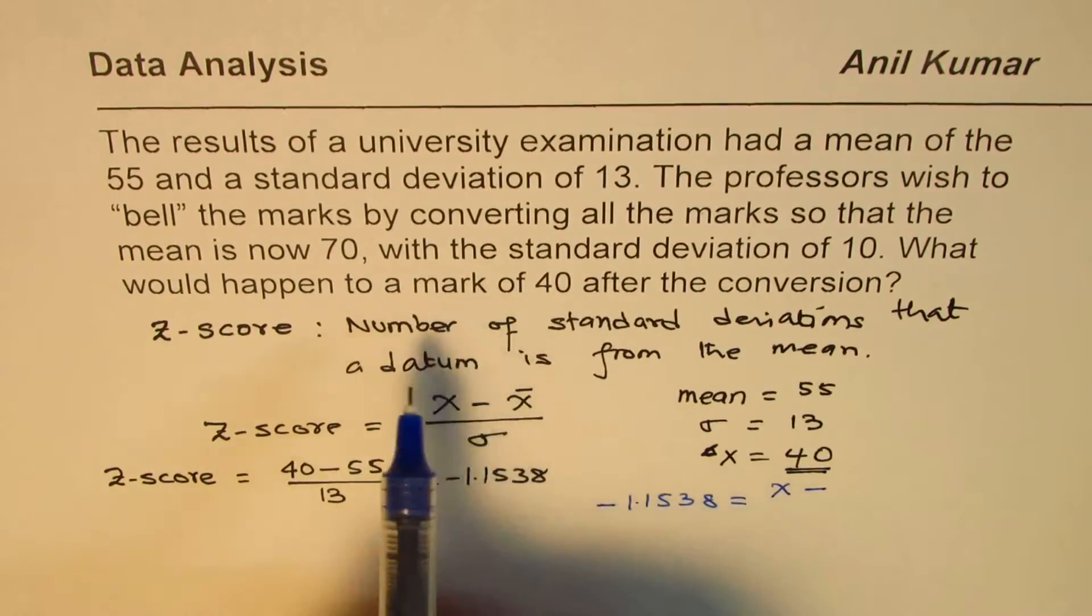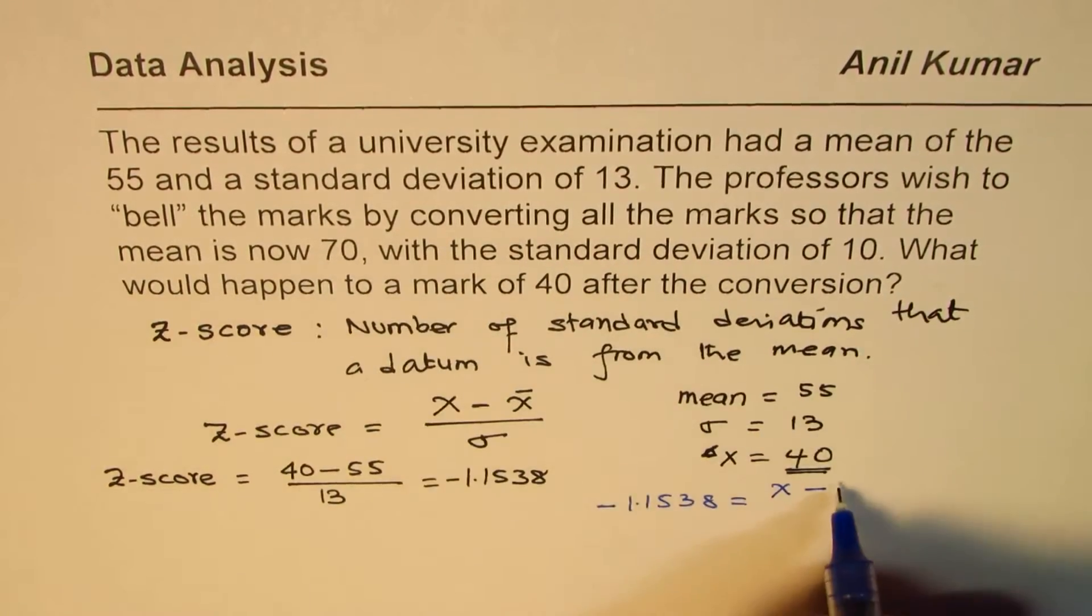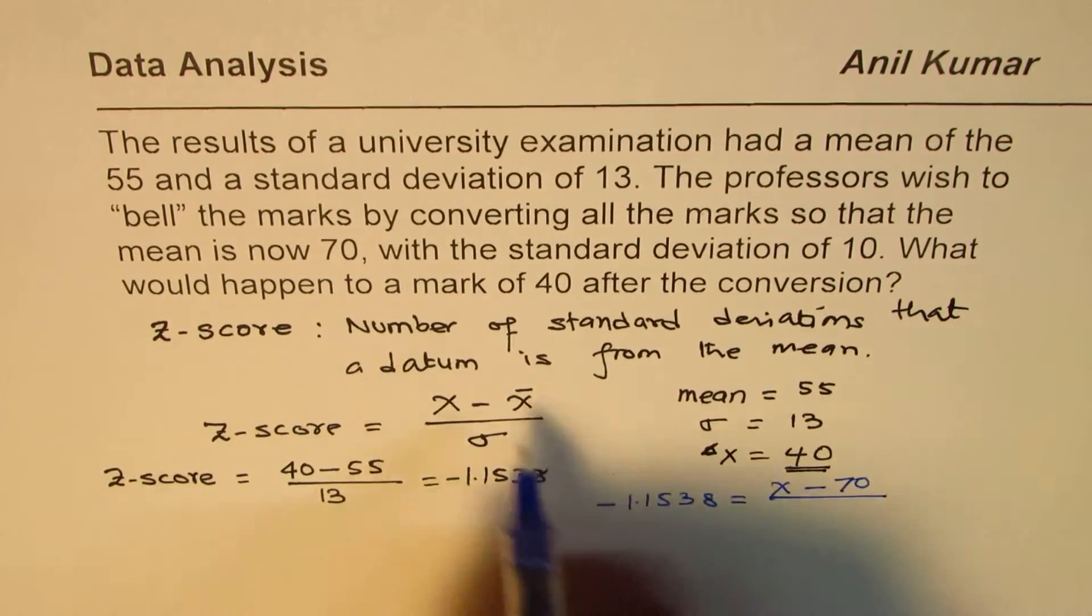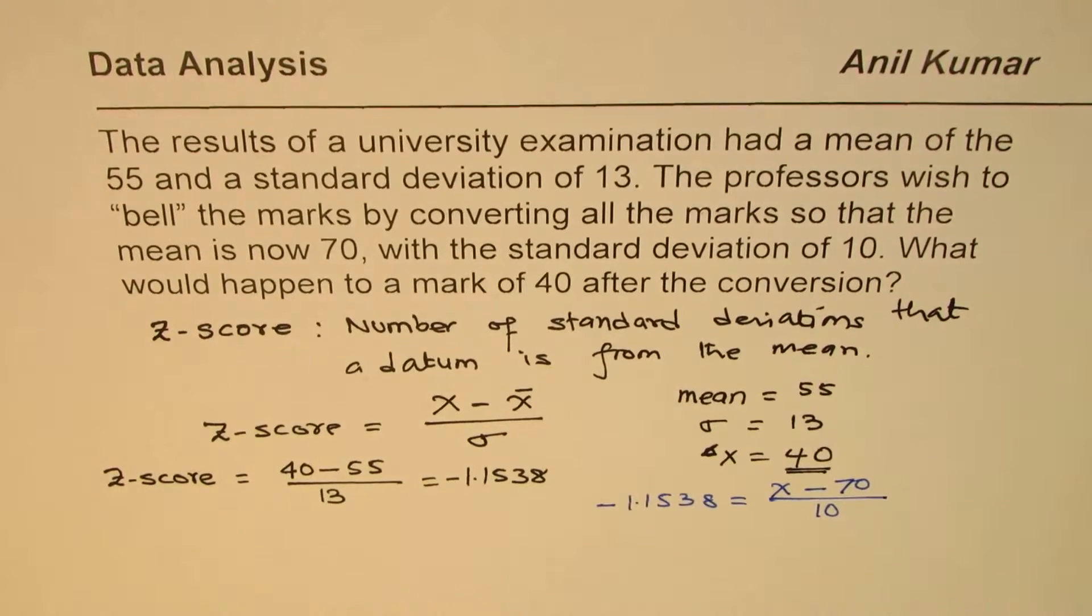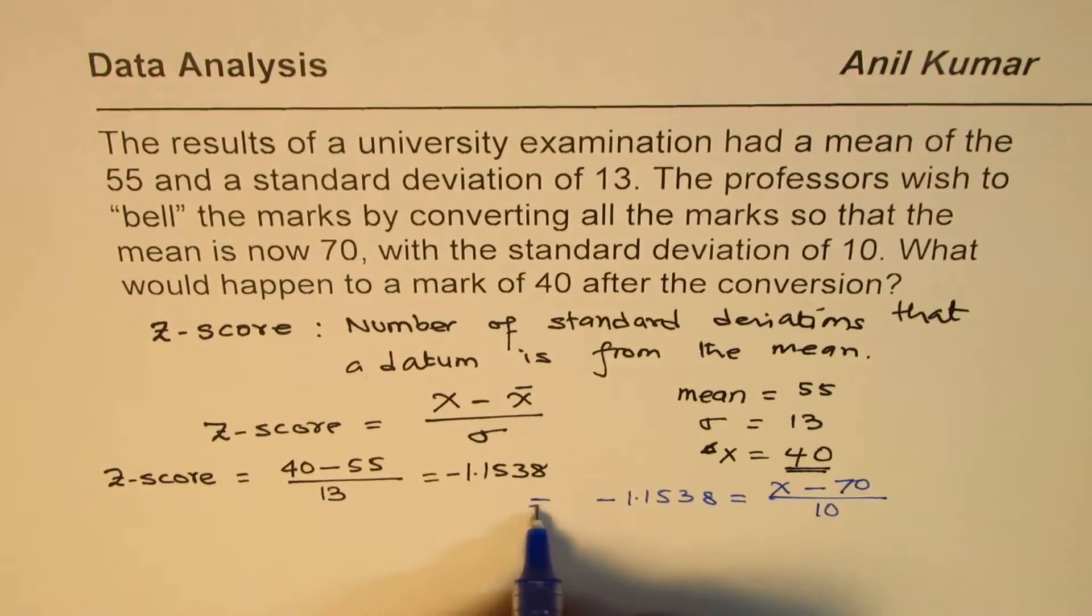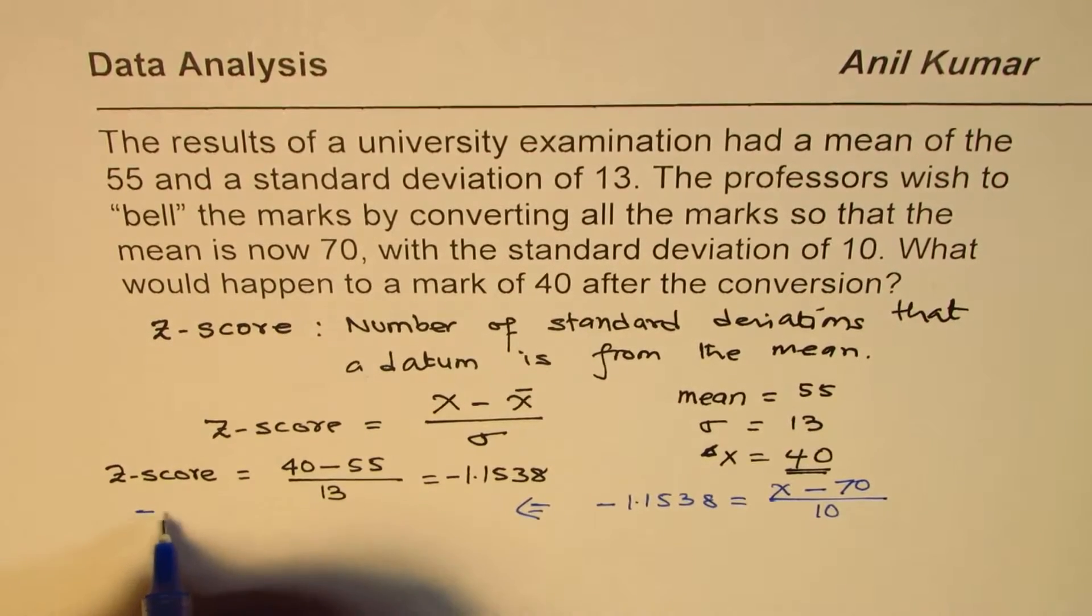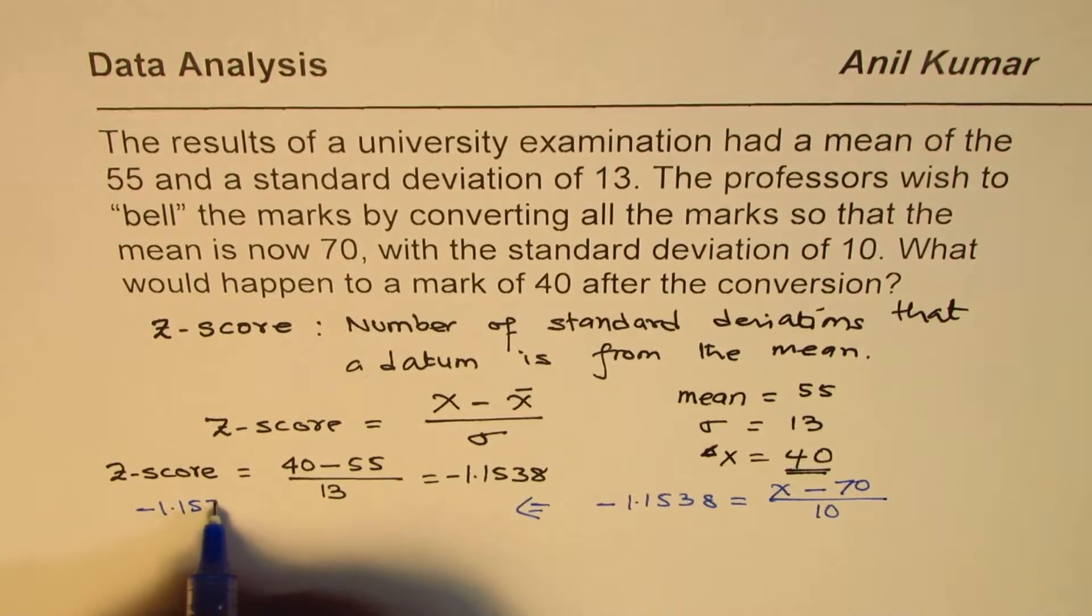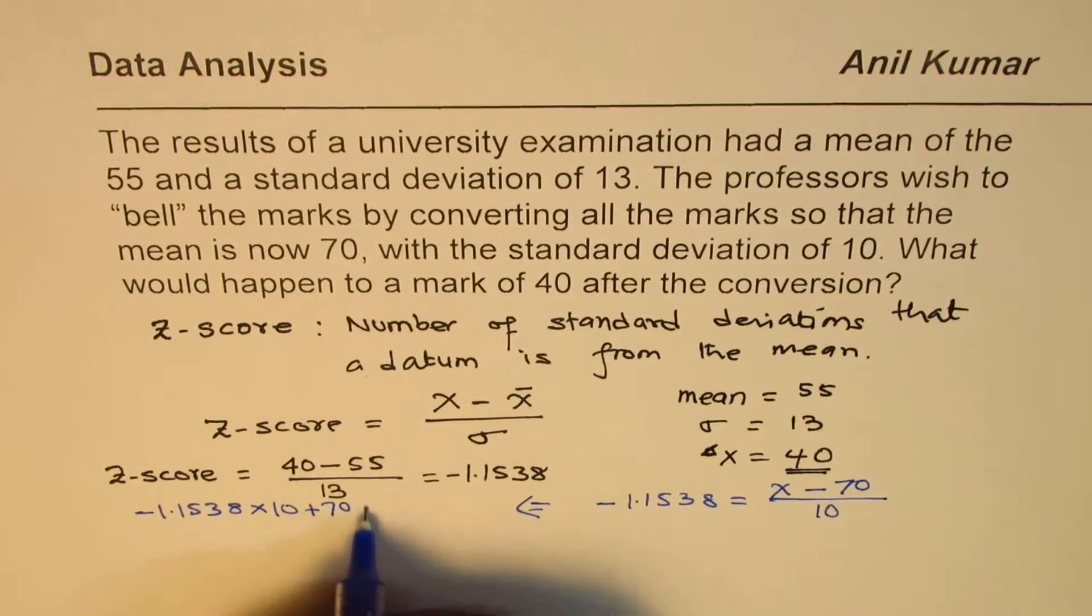With the new mean, we're converting the mark so that the mean is now 70 and the standard deviation is 10. So that equation should be satisfied. We have to solve this equation to get the value of the new score. So that should be minus 1.1538 times 10 plus 70.